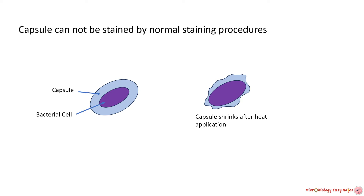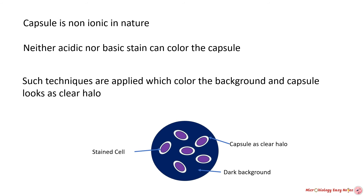In normal staining procedures, heat fixation is an essential step. However, with capsule staining this step cannot be applied due to the presence of different types of polysaccharides and about 90 percent water — heat causes shrinkage and distortion of the capsule.